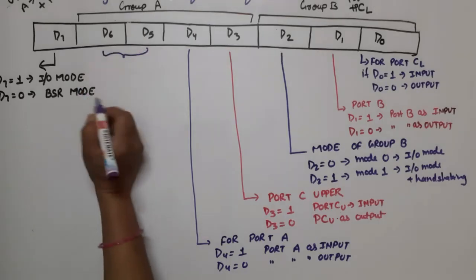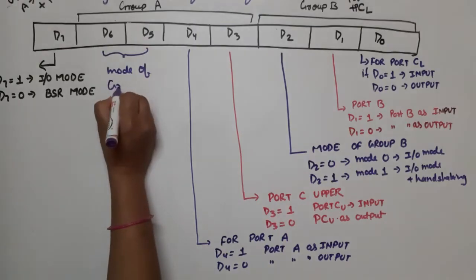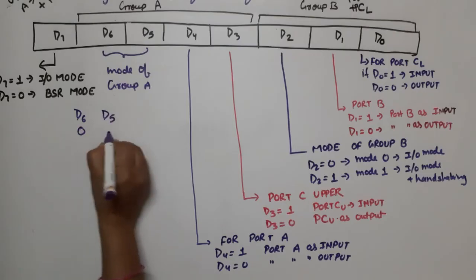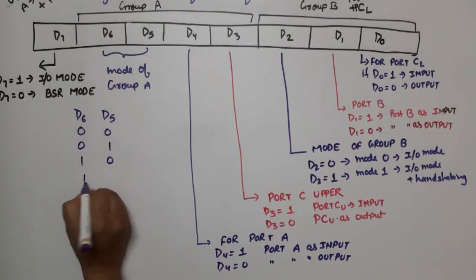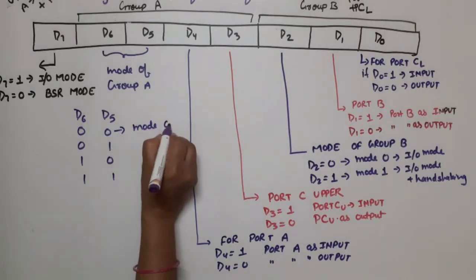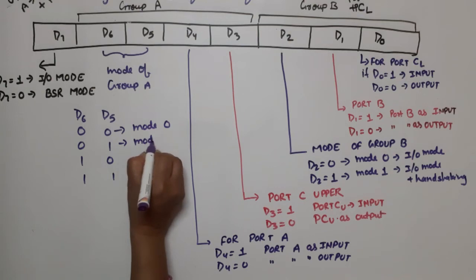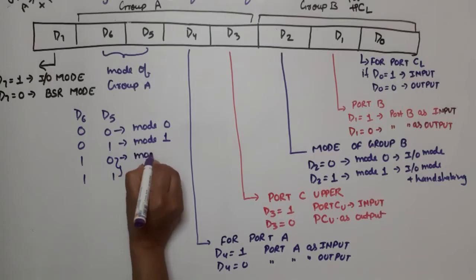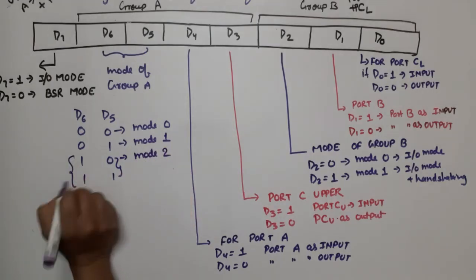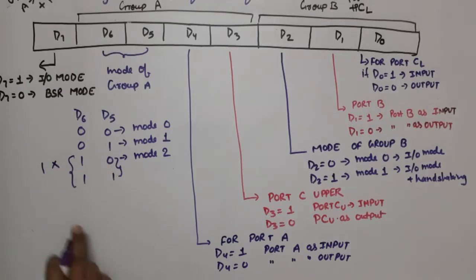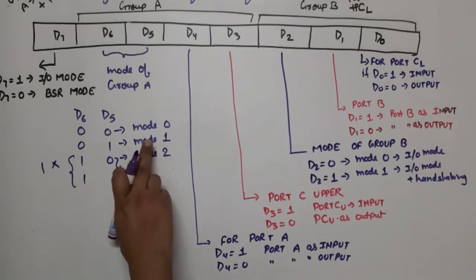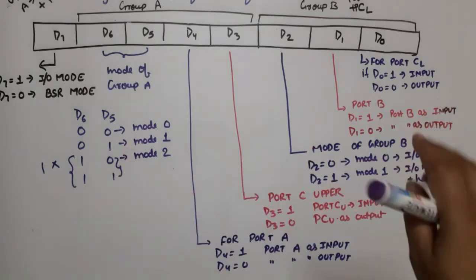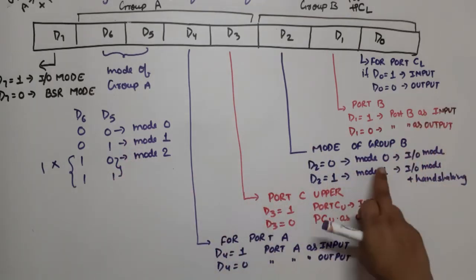D6 and D5 together determine the mode of Group A. Since these are two bits, four combinations are possible. If D6-D5 is 00, Group A works in mode 0. If it is 01, Group A works in mode 1. If it is 1X (10 or 11), Group A works in mode 2. So Group A supports 3 modes (0, 1, 2) while Group B supports 2 modes (0 and 1).